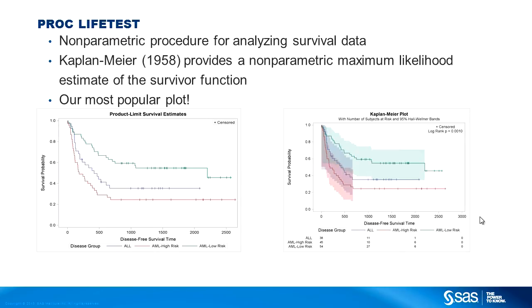On the left, we see the graph that comes out of ProcLifeTest by default. On the right, we see various customizations. We've changed the title, we've added a p-value, we've added Hall-Wellner confidence bands, and we've added an at-risk table. There are lots of things we can do to this plot.